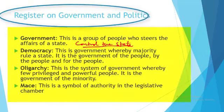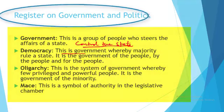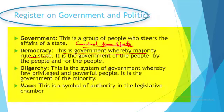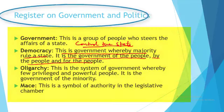In a democracy, leaders occupy public offices for a fixed term of office. According to Abraham Lincoln, it is 'government of the people, by the people, and for the people.' This definition of democracy was given by Abraham Lincoln, a former American president.